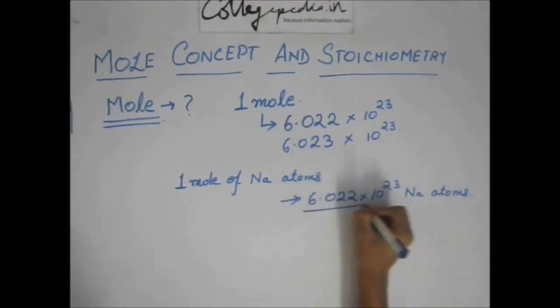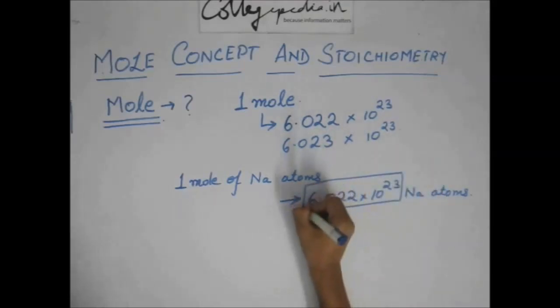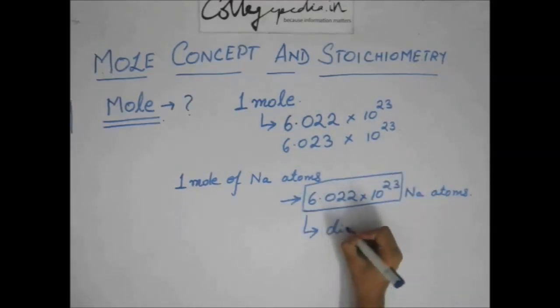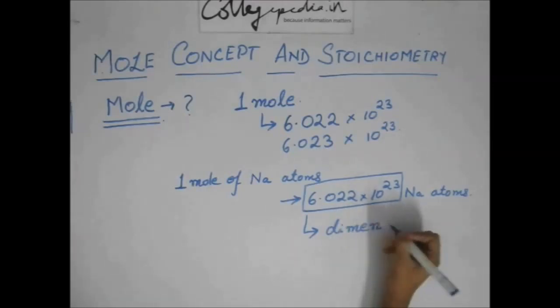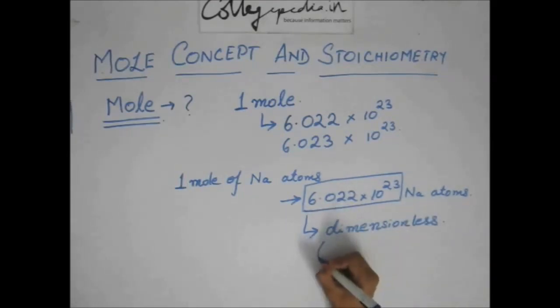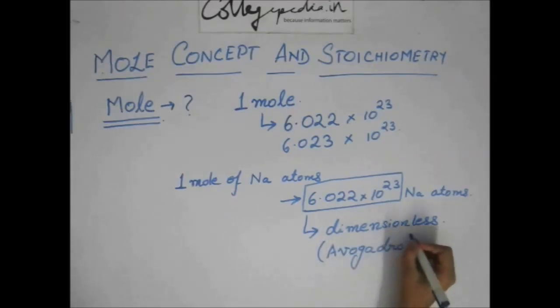And this quantity is a dimensionless quantity. It has no dimensions of length or anything. And it is commonly called the Avogadro's number, denoted by Na.